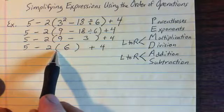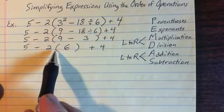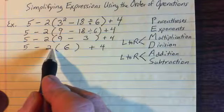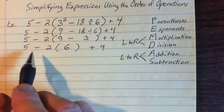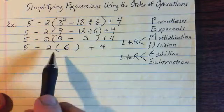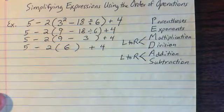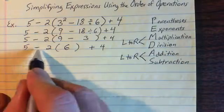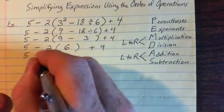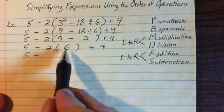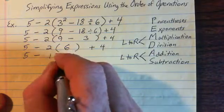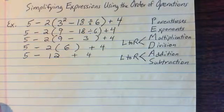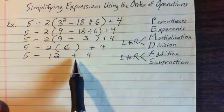If there's no operation symbol between a number and parentheses, it means multiplication — if no operation is indicated in algebra, it means multiplication. So should I do the subtraction or the multiplication first? Multiplication should come first, so I do not do 5 minus 2 next. I write 5 minus and then multiply 2 times 6, which is 12, and then I have the plus 4.